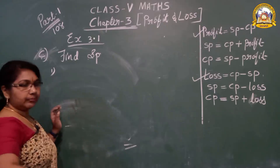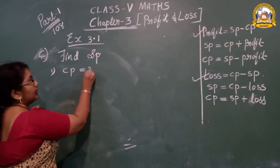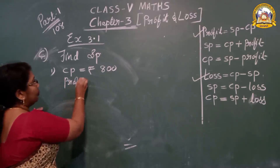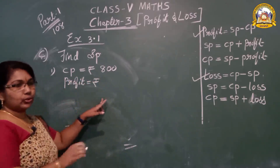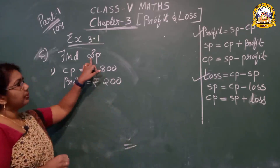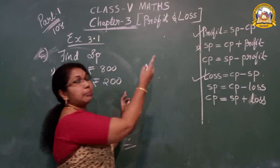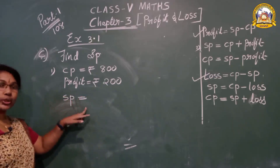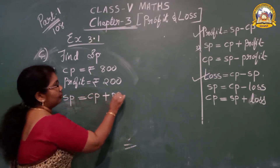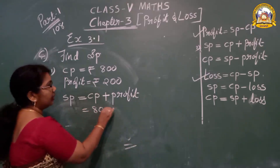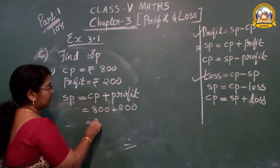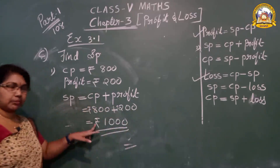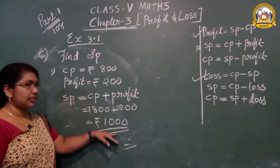First question: CP is equal to rupees 800, Profit is equal to rupees 200. We have to find SP. Look at the formula: SP equals CP plus Profit. CP is 800 plus Profit is 200. The answer is rupees 1000. Don't forget to write the rupees symbol — always write CP, SP, profit and loss with the rupees symbol. So SP is 1000 rupees.